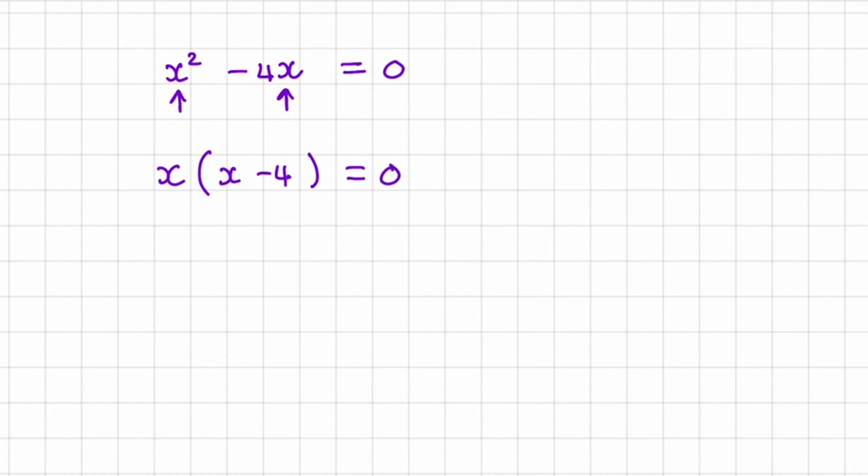So now to satisfy this equation I can see I can take the first x and make that equal to 0. So that becomes 0 times negative 4 and that is equal to 0. So x can be equal to 0.